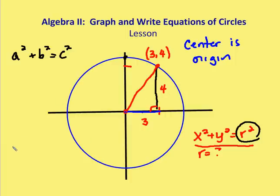So I know that the distance is going to be the square root of 3 squared plus 4 squared, which is going to be 5. So I know now that my radius is 5. I can rewrite the equation as x squared plus y squared is equal to r squared, or 25.